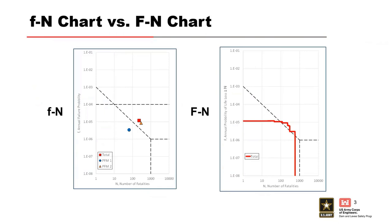The little FN chart shows individual potential failure modes portraying the potential for life loss as the estimated average number of lives lost on the x-axis, and the annual probability of failure on the y-axis. In addition to discrete risk estimates for individual potential failure modes, the total risk for the facility can also be plotted. A big FN plot shows the cumulative risk posed by all potential failure modes — it's a cumulative curve showing the probability of N or more lives lost. Both plots require quantitative risk estimates to create.